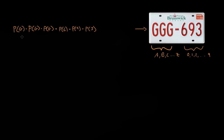What's the probability of getting G as the first letter? Well, that's one letter out of a total of 26, so the probability is 1 out of 26. That's true for the next G as well — 1 out of 26 — and again for the third G, also 1 out of 26. Now what's the probability of getting a 6? That's one number out of a total of 10, since we have digits 0 through 9. We want this one digit out of a possible 10, and the same applies for the 9 and the last digit — each is 1 out of 10.